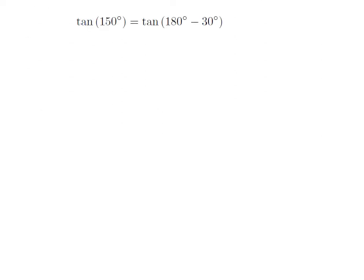As 150 degree is equal to 180 degree minus 30 degree, so tangent of 150 degree is equal to tangent of 180 degree minus 30 degree.